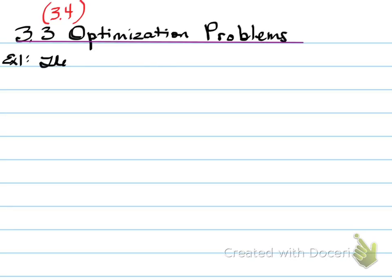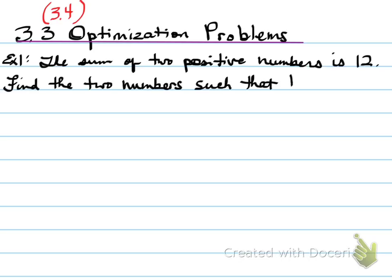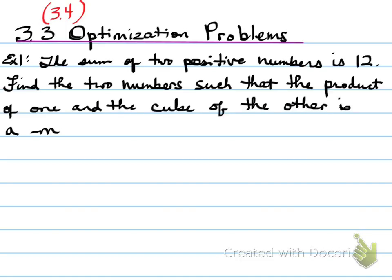Alright, let's look at 3.3 and 3.4, which are optimization problems. We're looking at various different word problems that involve calculus. So, the first example, the sum of two positive numbers is 12. Find the two numbers such that the product of one and the cube of the other is a maximum. If you look at the underlined word, the idea you have to remember is we're only looking at positive numbers.